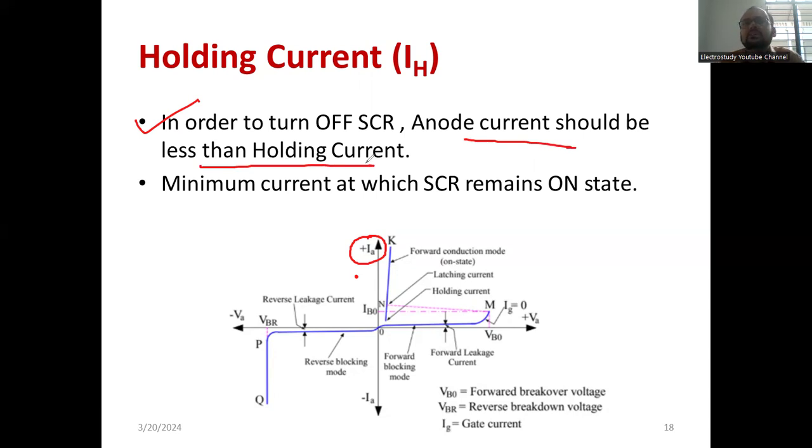Like devices, the latching and holding current will be predefined in the data sheet you will be getting. In order to turn off the SCR, the anode current should be below the holding current. Then only the device will be completely turned off. People will always think that if I remove the gate current, then the device will turn off. That concept is wrong. Because it's a semi-controlled device.